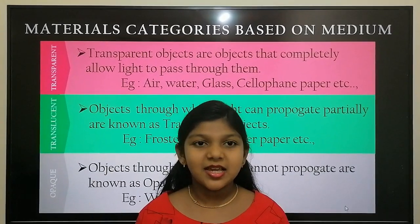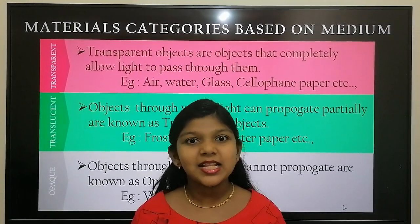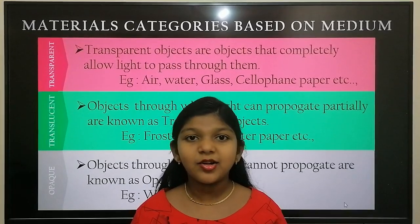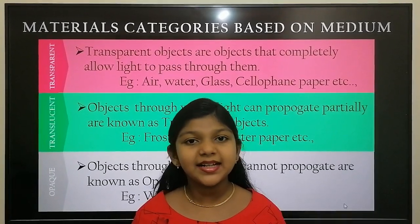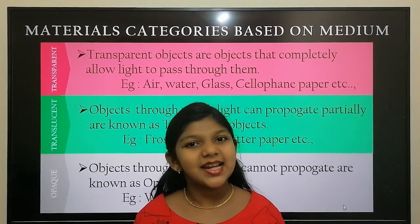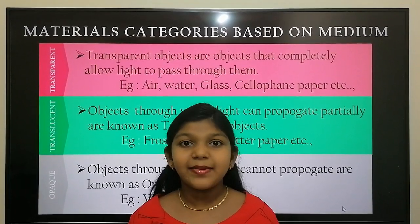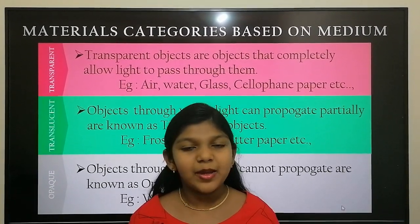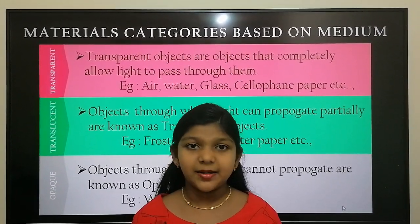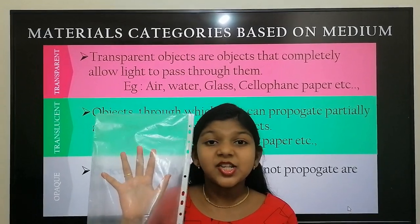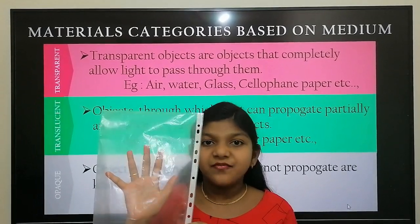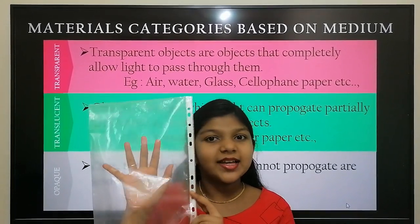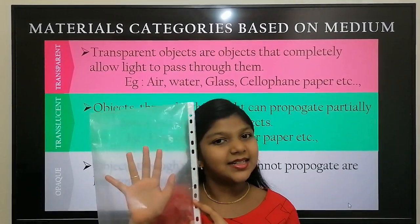First we are going to see about transparent objects or transparent materials. The objects that allow light to completely pass through them are known as transparent objects. For example, air, clear water, glass, cellophane paper, etc. I have taken this transparent sheet which allows light to pass through it completely. That is why you can see my hand clearly.